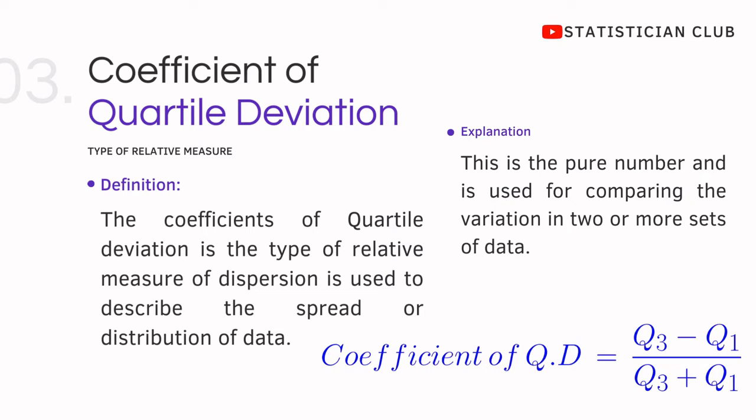The coefficient of quartile deviation is a type of relative measure of dispersion and is used to describe the spread of data. Its formula is Q3 (3rd quartile) minus Q1 (1st quartile) over 3rd quartile plus 1st quartile.